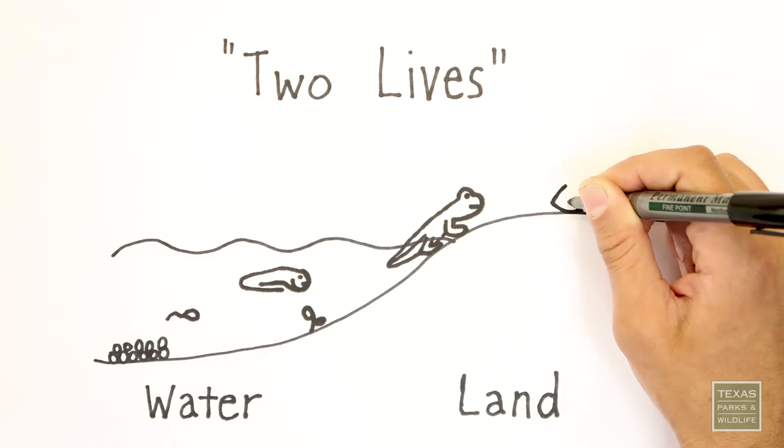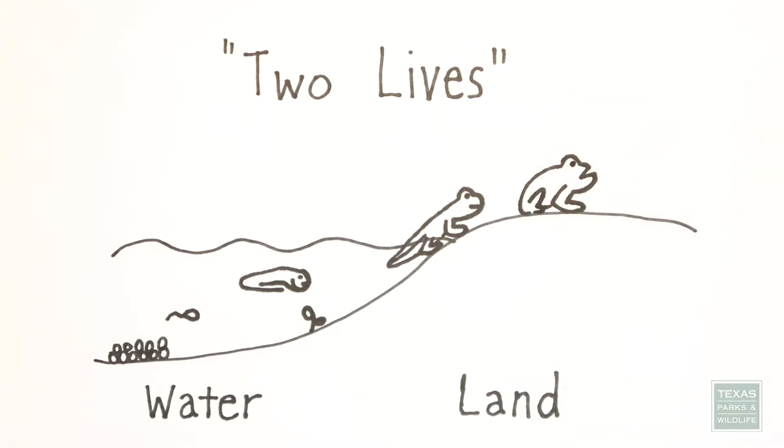As they grow, they begin to spend their lives outside of water, breathing air and eating insects. Adults then lay and fertilize their eggs in water, like fish.